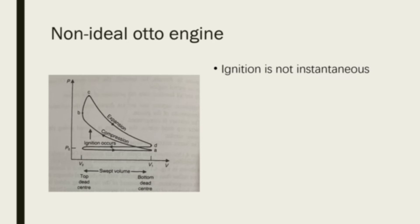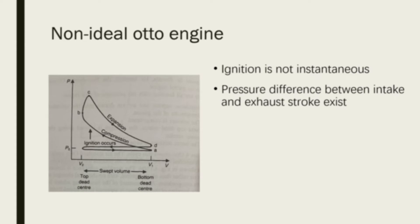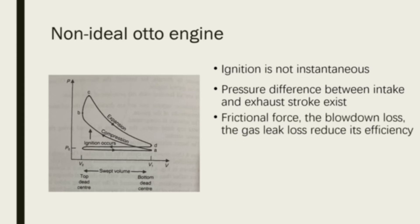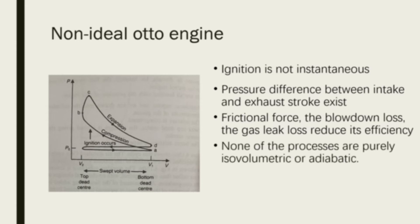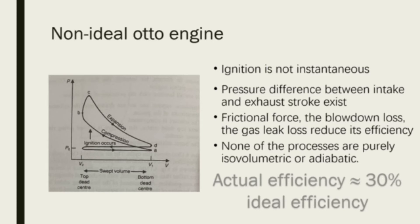Additionally, the pumping work causes the intake and exhaust strokes of the actual Otto engine to show apparent pressure differences. In real life, the frictional forces in each part of the engine, the blowdown losses, and the gas leak losses would all cause the actual Otto engine to lose energy and efficiency. You should also notice that none of these processes are purely isovolumetric or adiabatic. All these phenomena and losses lead to the fact that the actual efficiency of real Otto engines is much lower than the idealized value — normally about 30%.